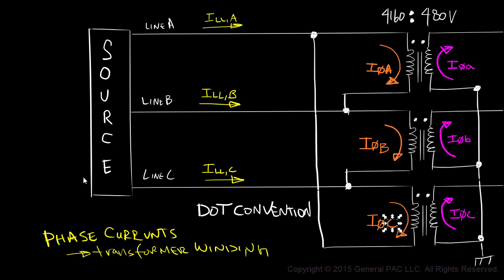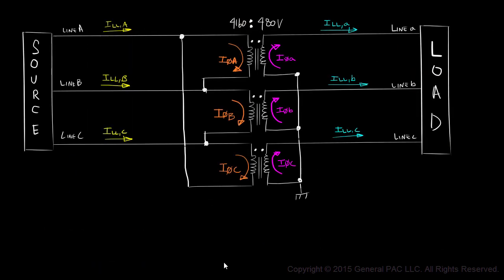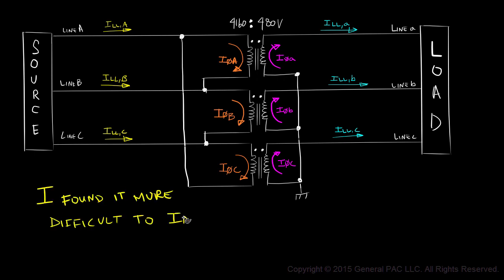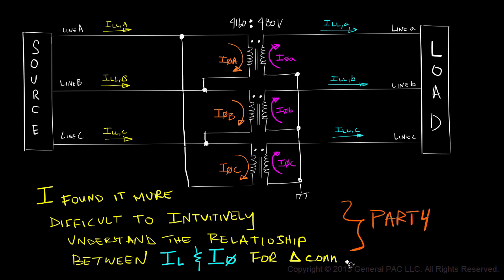And that is how we describe phase currents and line currents for the delta-Y connected transformer connection. For me personally, I found it very difficult to intuitively understand the relationship between line current and phase current for the delta-connected transformer. However, this difficulty can be easily overcome with a simple yet intuitive explanation. In Part 4, we'll cover this relationship.